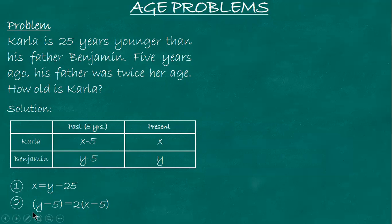Don't forget the parentheses or it will change the values. If you don't put parentheses, it will just be 2x minus 5, which is wrong. It should be 2 times (x minus 5), which equals 2x minus 10.